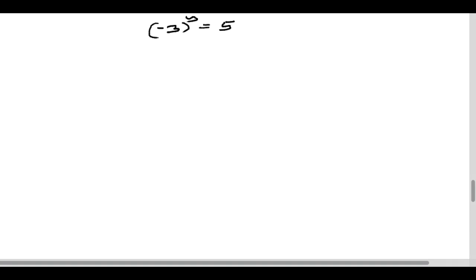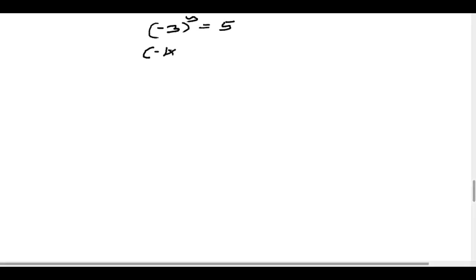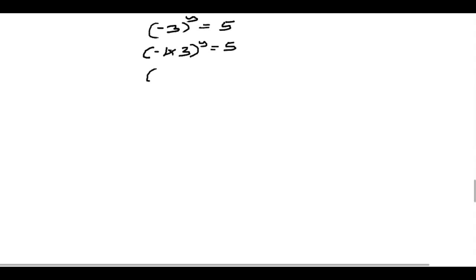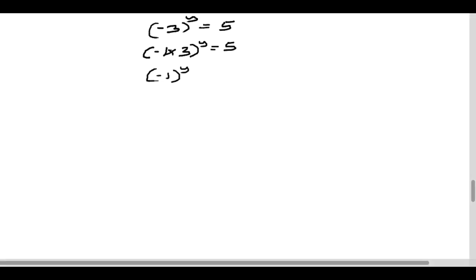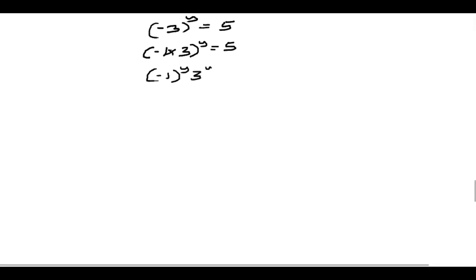Welcome back. You've been told to solve the problem: negative 3 raised to the power y equals 5. We have a complex case here — a negative number raised to an unknown. To solve for y, write negative 3 as negative 1 times 3, so (-1 × 3)^y = 5. Using the laws of indices to separate them, you get (-1)^y times 3^y equals 5.